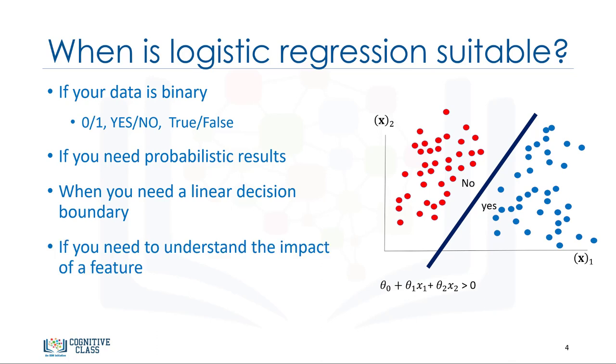Fourth, you need to understand the impact of a feature. You can select the best features based on the statistical significance of the logistic regression model coefficients or parameters. That is, after finding the optimum parameters, a feature x with the weight theta 1 close to 0 has a smaller effect on the prediction than features with large absolute values of theta 1. Indeed, it allows us to understand the impact an independent variable has on the dependent variable while controlling other independent variables.